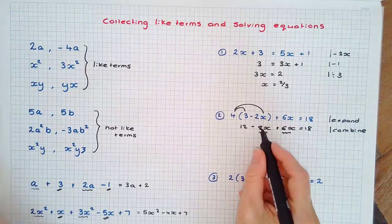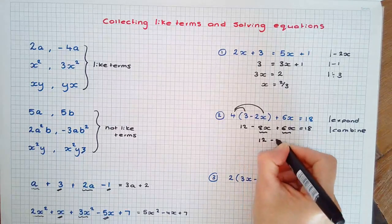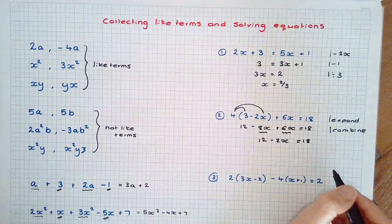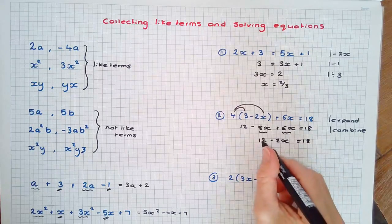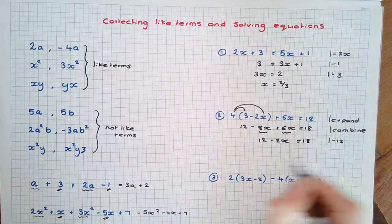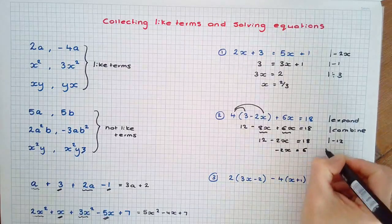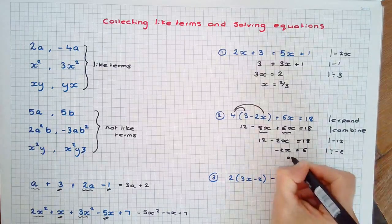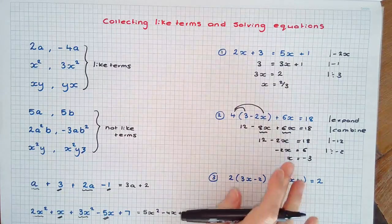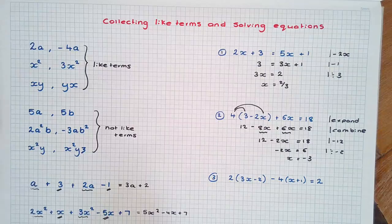12 take away 8x plus 6x is 12 take away 2x, and now we can go through and solve as a normal two-step equation. I'm going to subtract 12 from each side and divide by negative 2, and I get the final solution as negative 3. Of course I would substitute in and make sure the left-hand side equals the right-hand side.